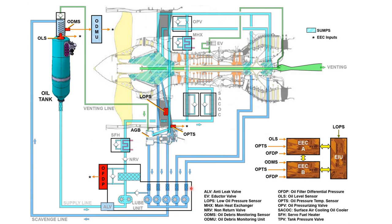Before reaching the scavenge pumps, the oil passes through strainers. There is a three-stage strainer and a two-stage strainer. The three-stage strainer scavenges oil from sump A, sump B, and the accessory gearbox, while the two-stage strainer receives supply from sump C and the transfer gearbox.